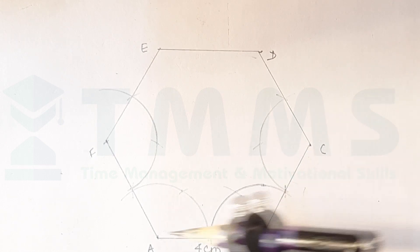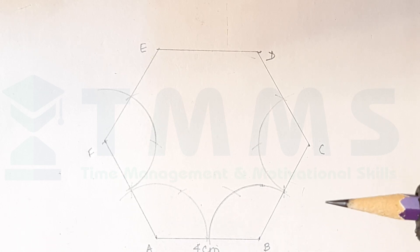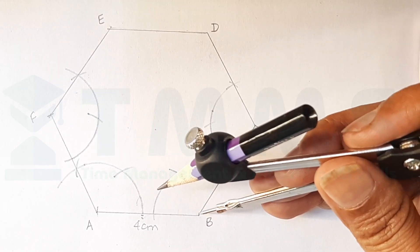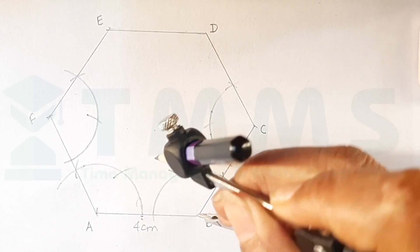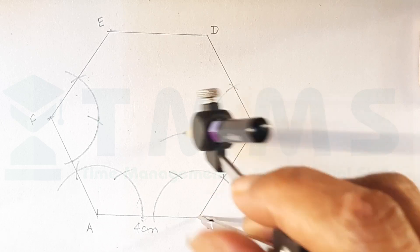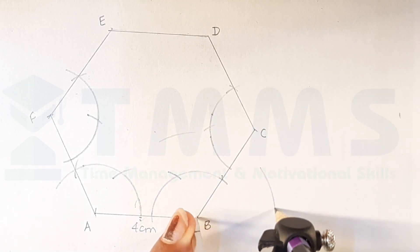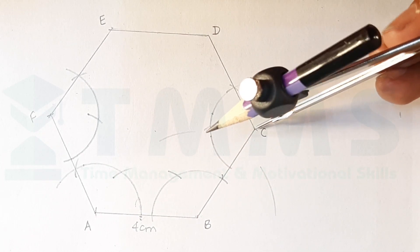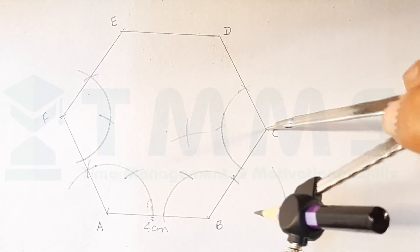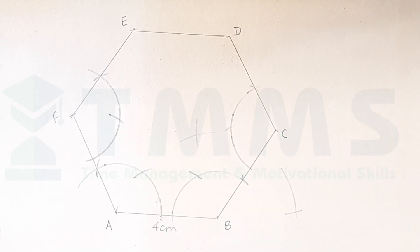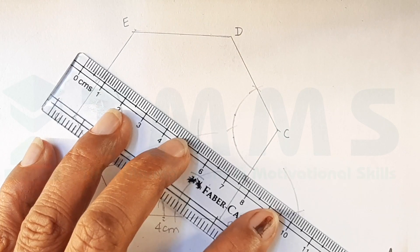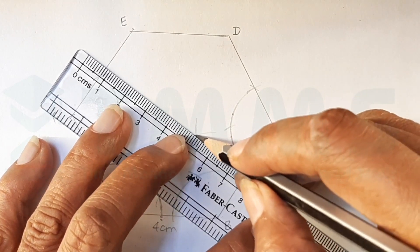You can use this hexagon to construct a circumcircle or incircle. For circumcircle, you will take the radius more than half of AB and BC — we will take two adjacent sides and bisect them. We will take any two sides; let us take BC. Draw two arcs above and below BC. With the same radius, keep the point of compass at C and draw the intersecting arcs on either side. Now, join these two intersecting points.